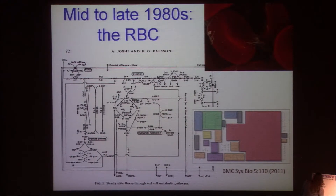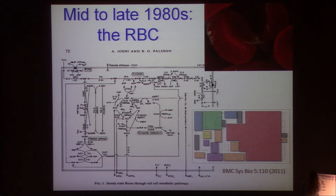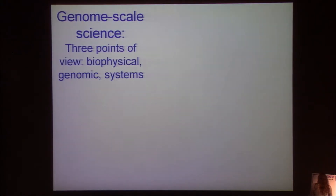Now, of course, 30 years later, we have a full resequencing of the human genome. We can identify the metabolic genes via deep proteomic data sets for the red blood cell, and we can construct the actual metabolic map. This little green area here is this map as seen in detail and as known in the mid-80s.